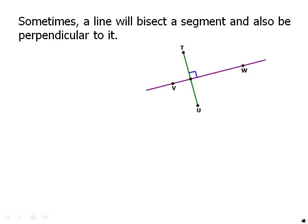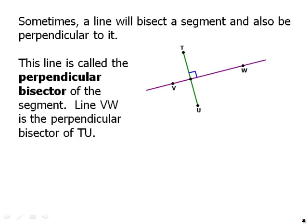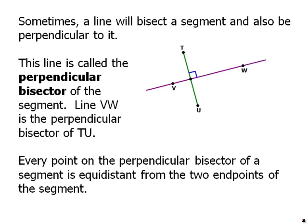Sometimes a line will bisect a segment and also be perpendicular to it. The line is called a perpendicular bisector of the segment. Line VW here is a perpendicular bisector of TU. Every point on the perpendicular bisector of a segment is equidistant from the two endpoints on the segment. And so that's a really handy fact to know. That shows up in a variety of ways. The perpendicular bisector, in fact, is the set of all possible points that are equidistant from the two endpoints of the segment.